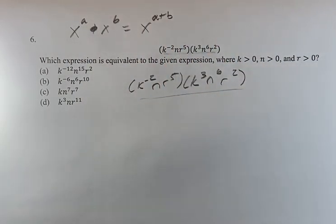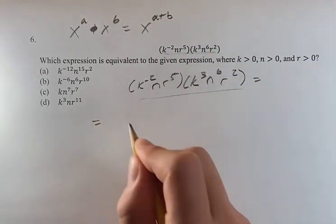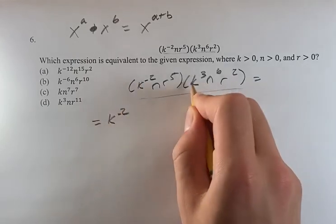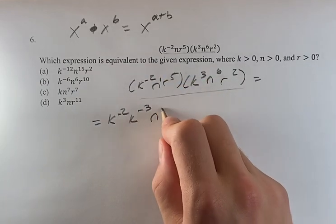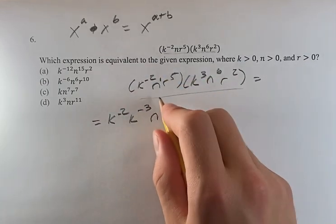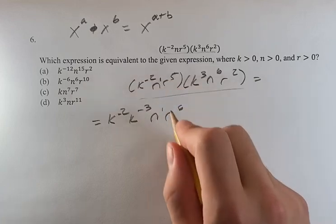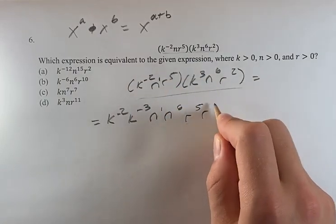And so if we just multiply this out normally, we get k to the negative 2 times k to the negative 3, n to the 1 times n to the 6 (you can add a little 1 in there to help with the exponent multiplication), and r to the 5 times r to the 2.